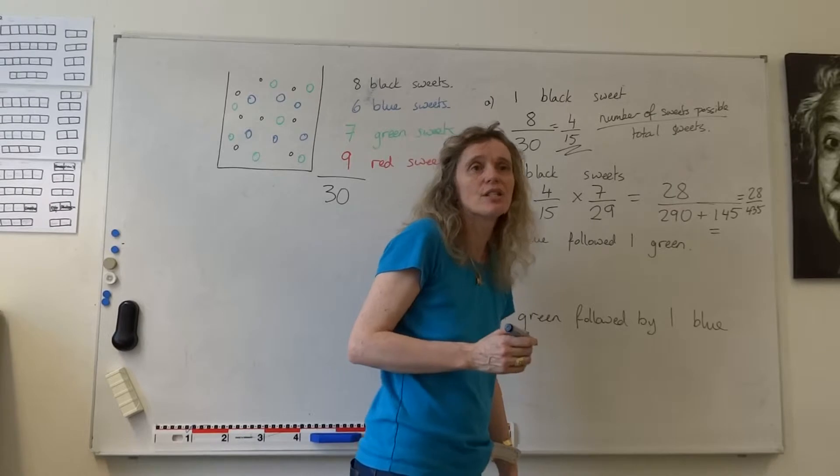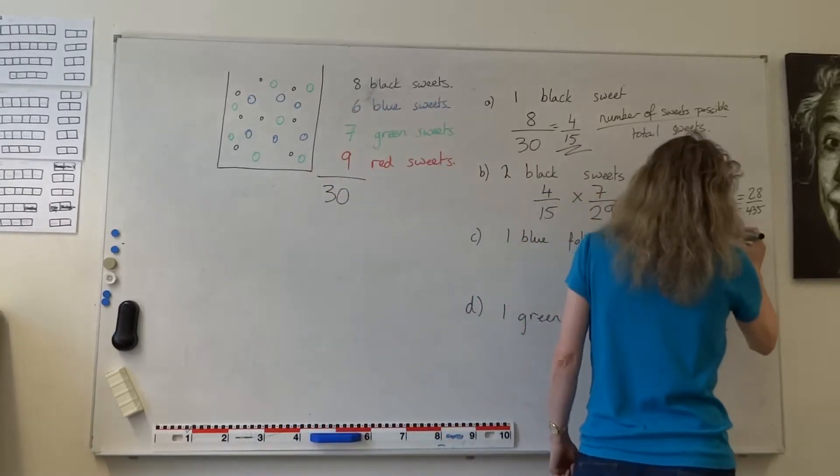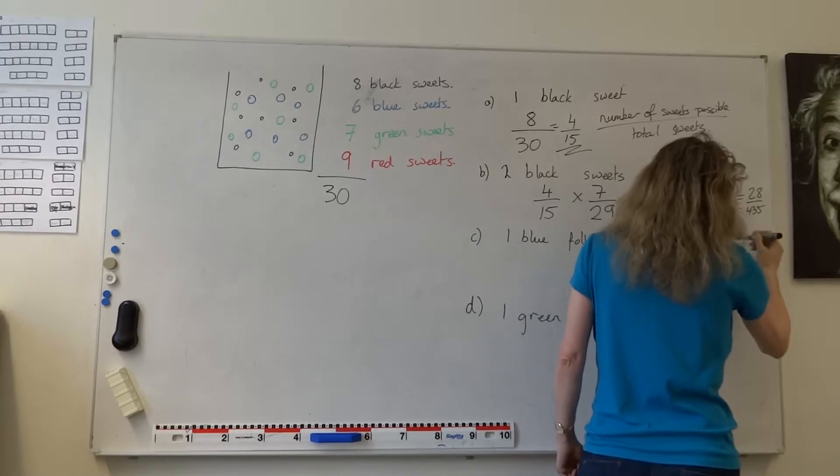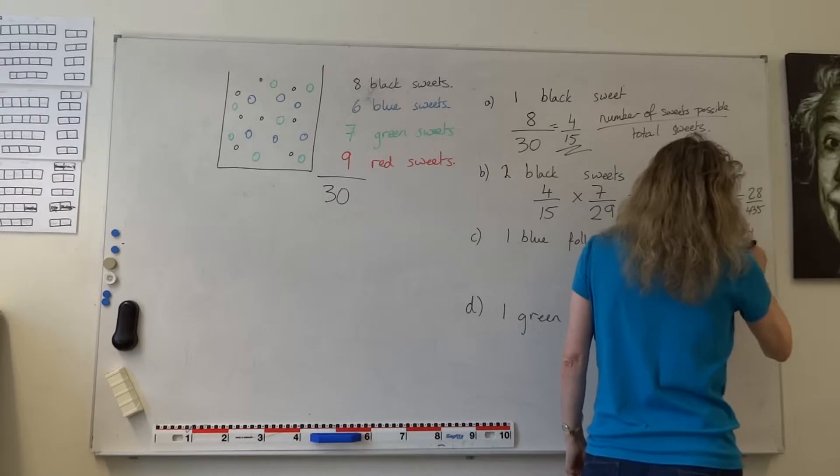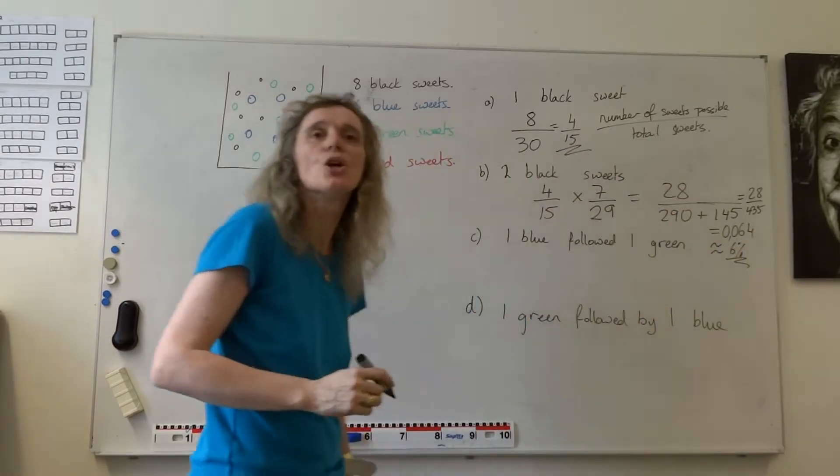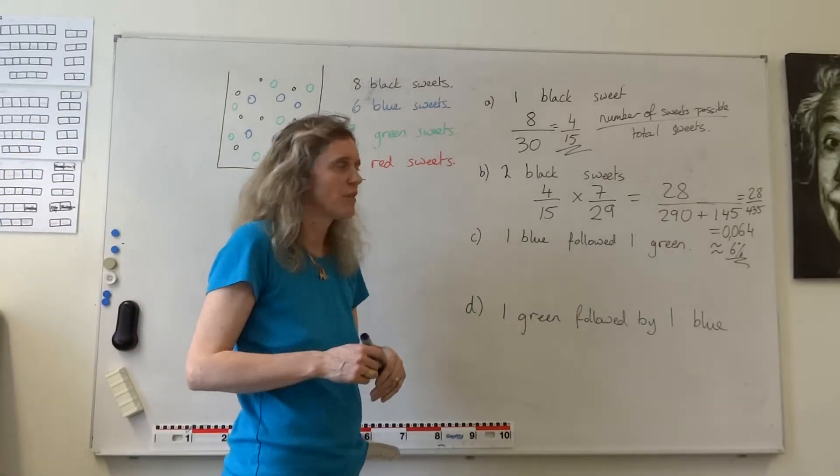28 four hundred and thirty-fifths. 0.064367. So 0.064. So approximately a 6% chance of me getting two black sweets straight after each other. There's a 6% probability of that.